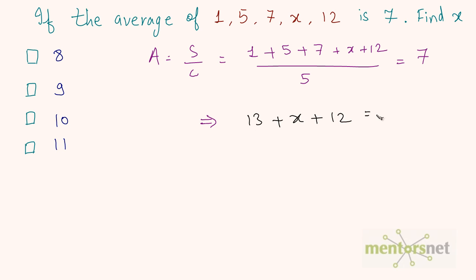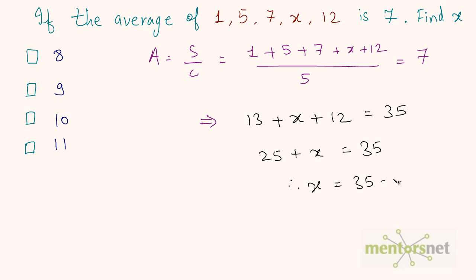So 1 + 5 + 7 + x + 12 = 7 × 5 = 35. Adding the known numbers: 1+5=6, +7=13, +12=25. So 25 + x = 35, therefore x = 35 − 25 = 10. The value of x is 10.